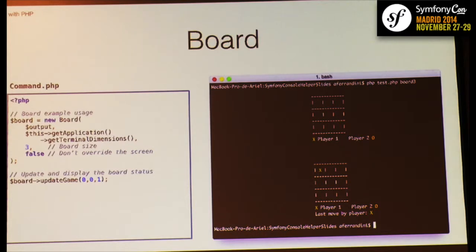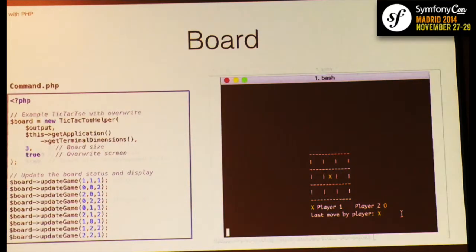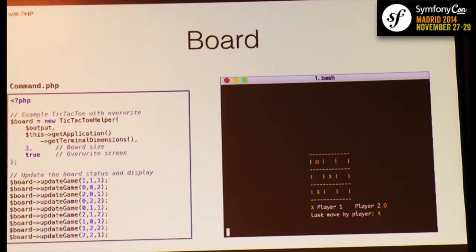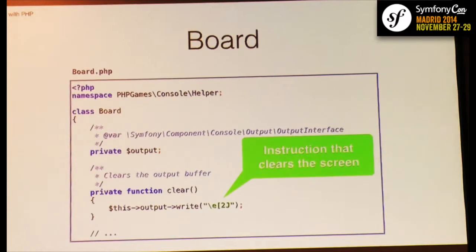Here you can see an example of a four-in-a-row game with background colors. The big challenge in the board helper was making the user feel that the screen isn't repainted — just updated. We do this with a simple line of code: a method called 'clear' that outputs an instruction which clears the screen and sets the cursor at the top, so you can redraw the full screen.